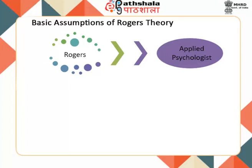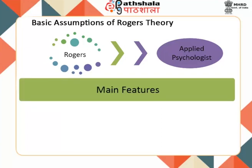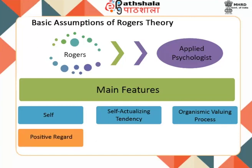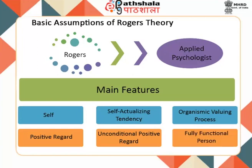The main features of Carl Rogers' theory of personality, which would be discussed in the next module, are: self, self-actualizing tendency, organismic valuing process, positive regard, positive self-regard, condition of regard, unconditional positive regard, incongruity, and fully functional individual.